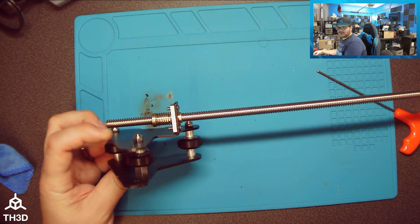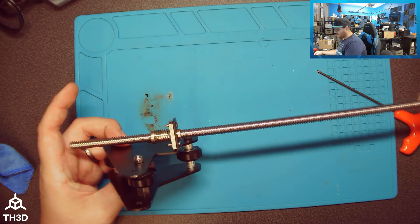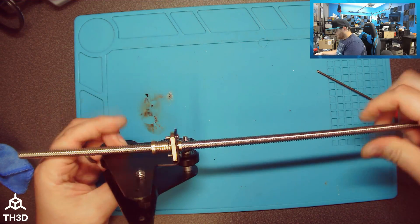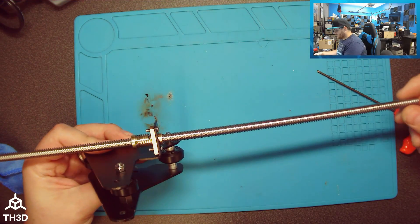You can just thread your lead screw back down through. And if you have a dual Z printer where you have two nuts, then just repeat the same process for the other side.